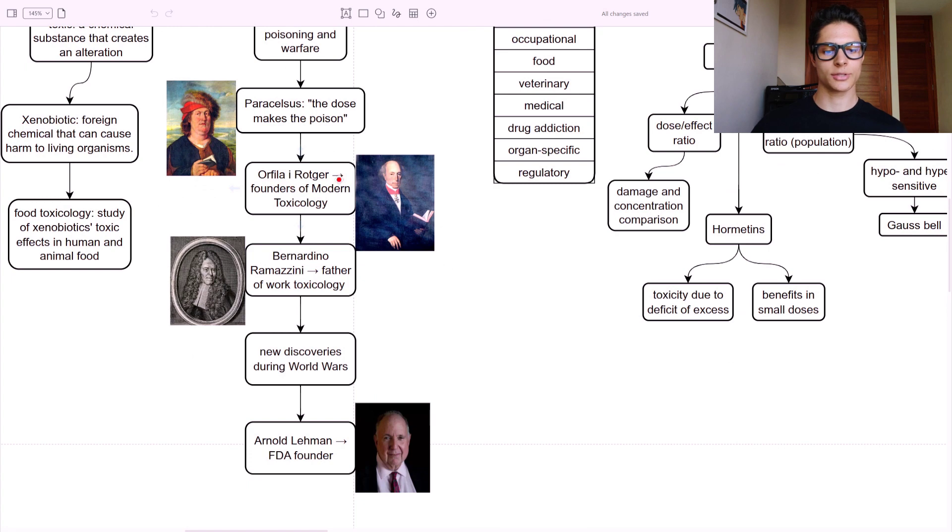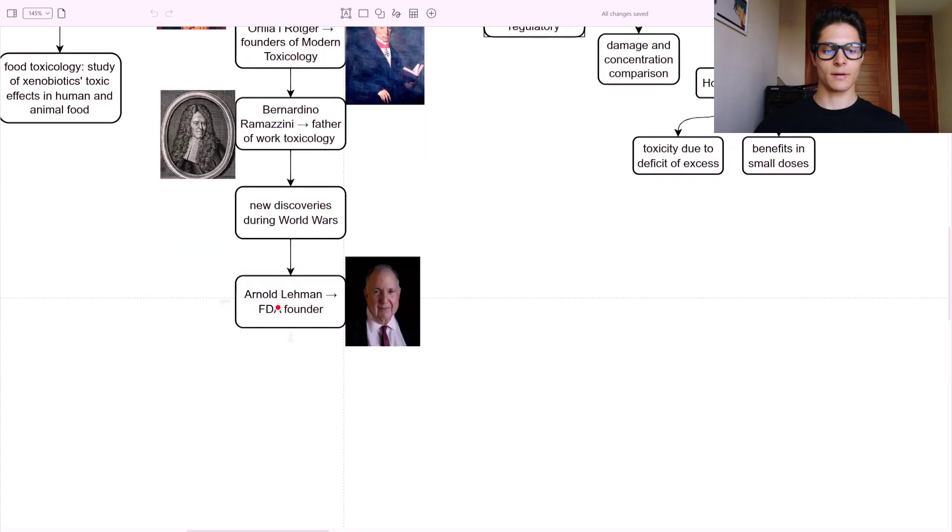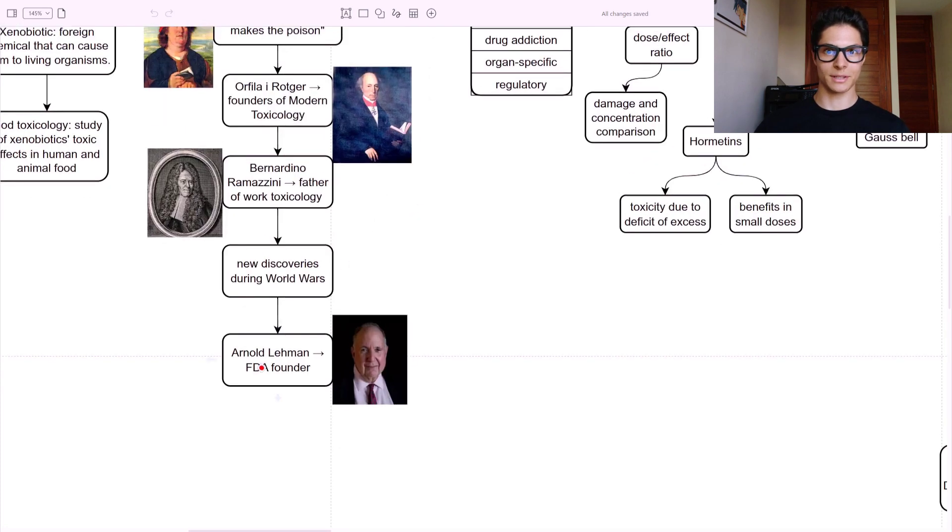Then we had Orfila and Roger. These are considered the founders of modern toxicology. Then another important character was Bernardino Ramazzini. He is the father of occupational toxicology. There were a bunch of new discoveries during World Wars on these toxins such as gas poisons and biological warfare. And then we have Arnold Lehman. He is the FDA founder and they regulate the toxins and toxicology of food mainly - the Food and Drug Administration.